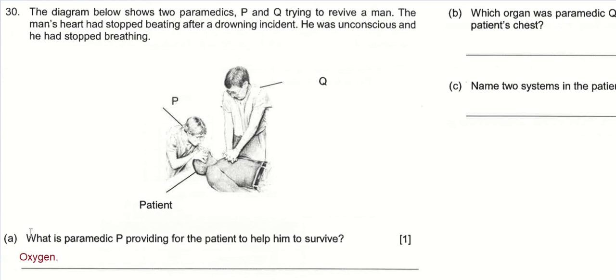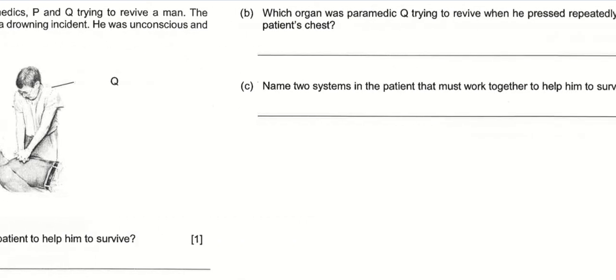As you can see, you don't have to use CCR here. You don't have to state your claim and provide evidence or comparison or reasoning, because the question is quite simple. What is paramedic P providing for the patient to survive? The answer is simply oxygen.